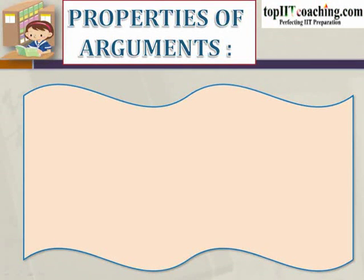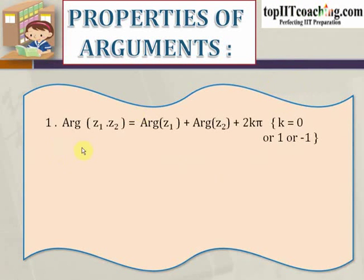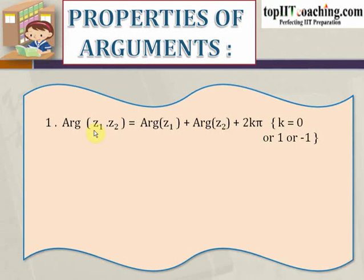In our previous lecture we have defined what is an argument of a complex number. Now let's see some of the very important properties of arguments. The first is: argument of z1 into z2 is equal to argument of z1 plus argument of z2 plus 2kπ, where k is equal to 0, 1, or minus 1. So if we have two numbers z1 and z2, then the argument of z1 into z2 is equal to argument of z1 plus argument of z2 plus 2kπ.